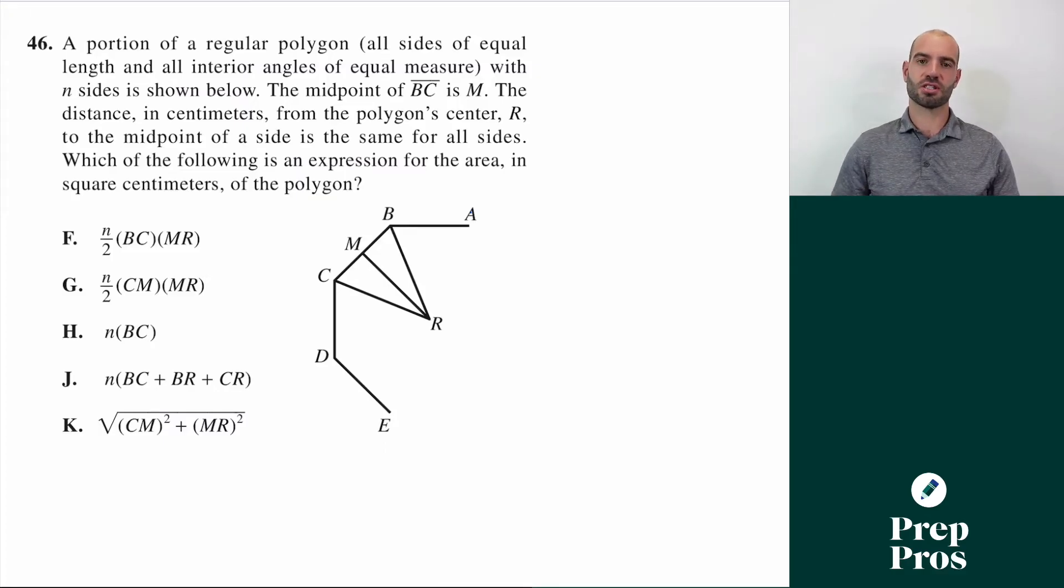Coming in at number two here is question 46. You might notice these aren't all going in order. Sometimes easier questions appear earlier, and they're not necessarily the last couple questions on the test. Usually 45 through 60 is the most difficult, but sometimes, like question 52 might be easy, but 58 or 59 might be hard. Here question 46 is one of the hardest.